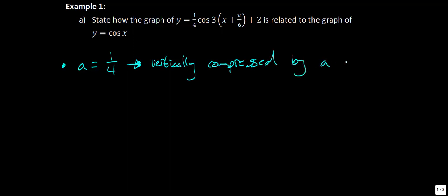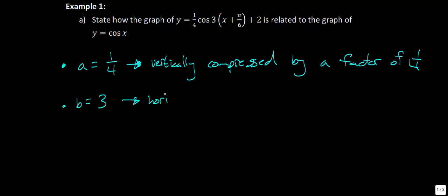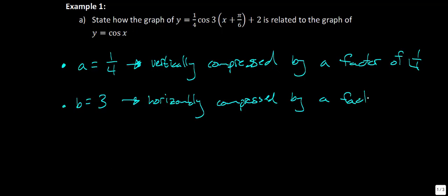If a is equal to one quarter, then we know that this is going to be vertically compressed because that number is between zero and one — and of course by a factor of one quarter. Next, we have a b value of three. Because that value is greater than one, it's actually going to be a horizontal compression. And when I say opposite, what I mean is we take the reciprocal, so it's going to be by a factor of one third.